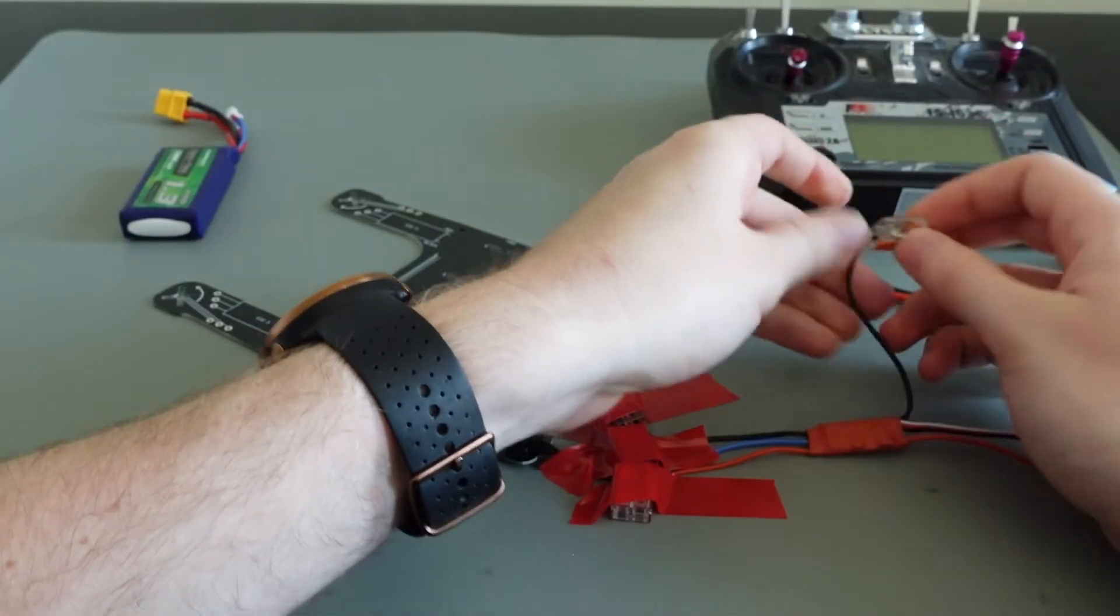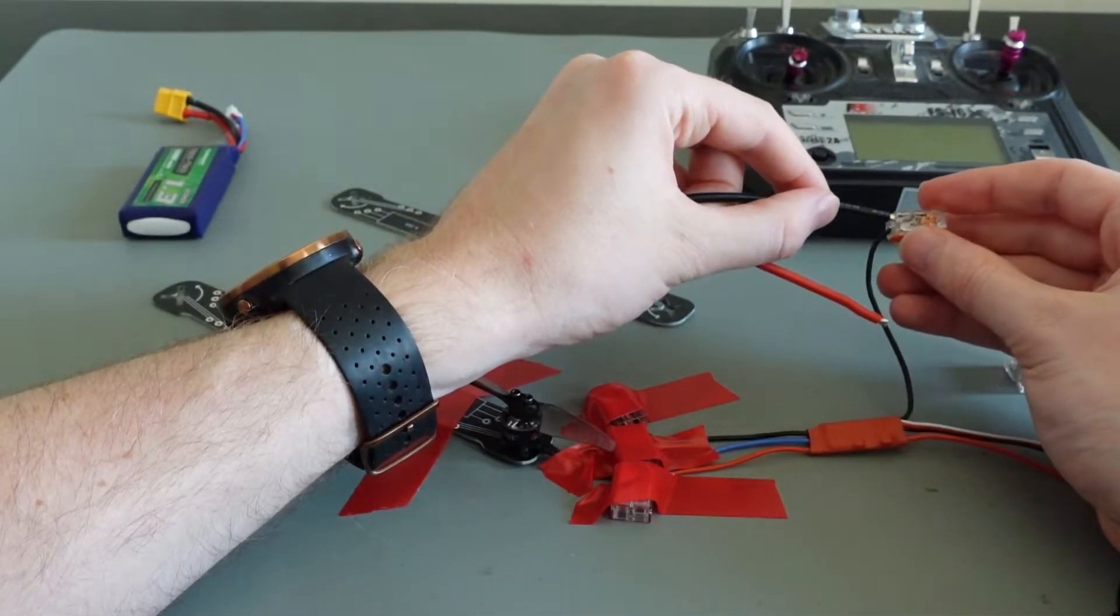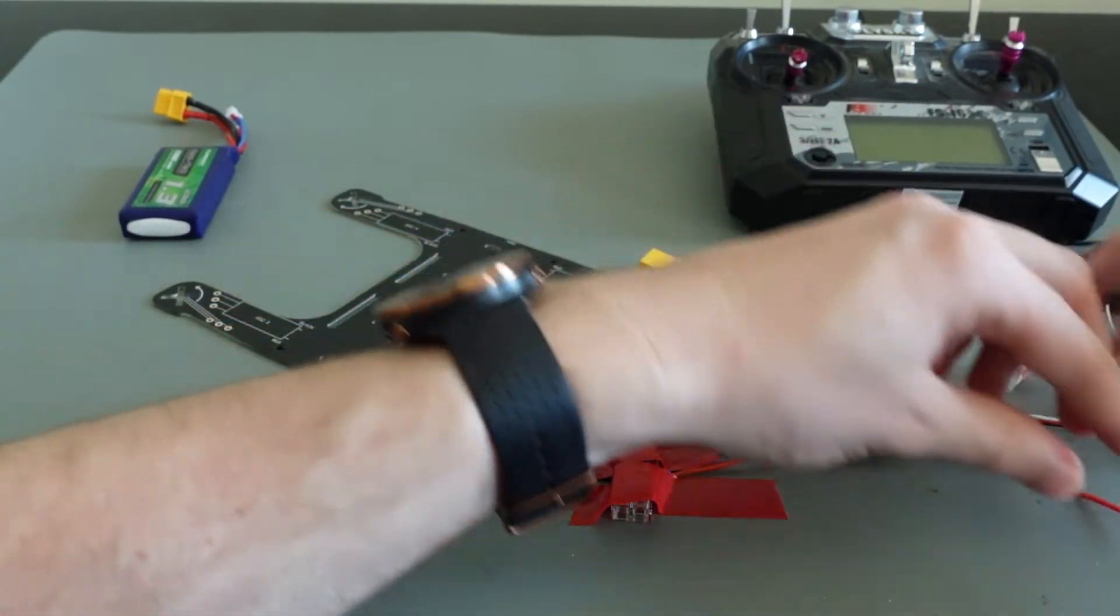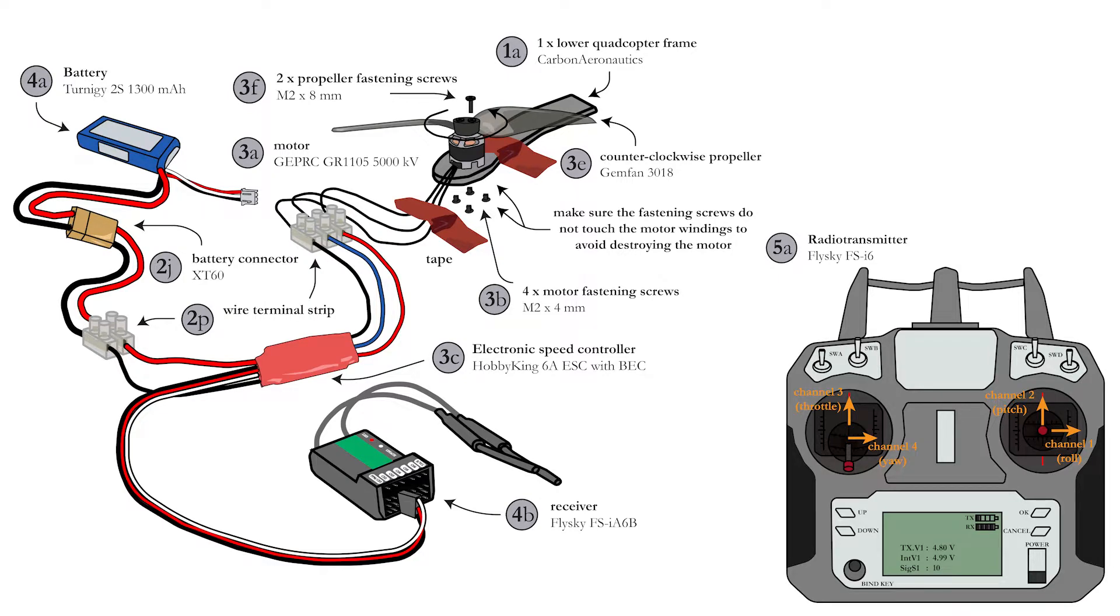Now connect the XT60 battery connector with the black and red wire from the ESC. In this case, you have to make sure to respect the colors. Almost all connections are made.